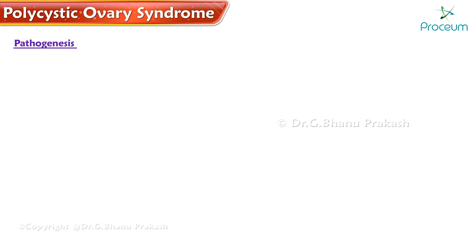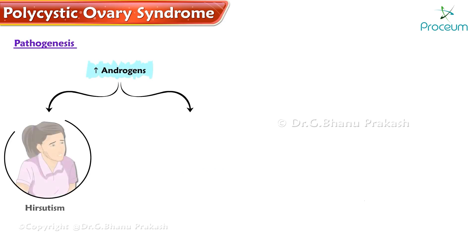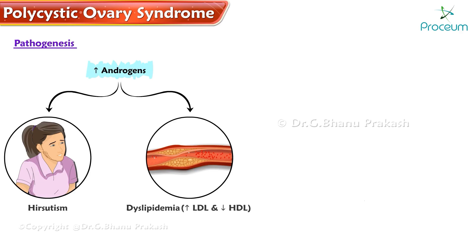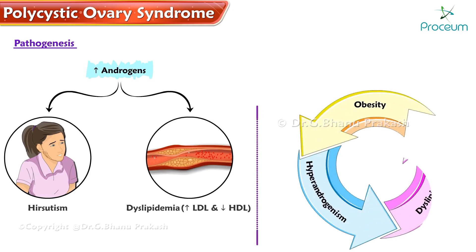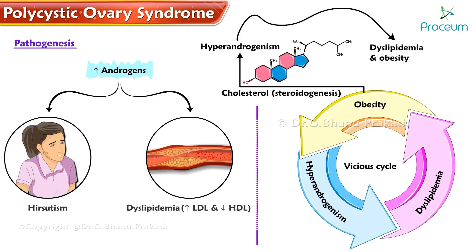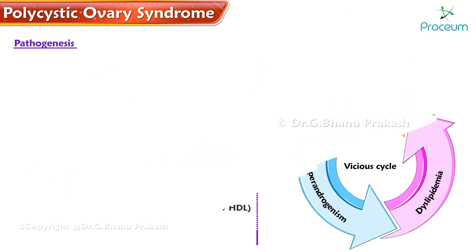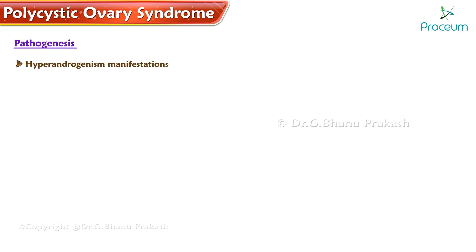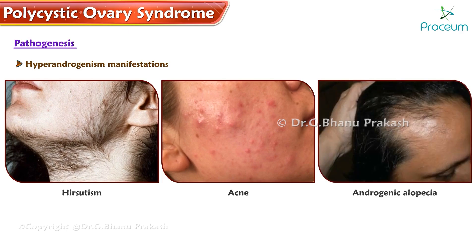The basic pathology is an increase in androgens. These androgens cause hirsutism and dyslipidemia, including increased low-density lipoprotein and decreased high-density lipoprotein. Obesity, hyperandrogenism, and dyslipidemia run in a vicious cycle. Obesity causes hyperandrogenism by providing excess free cholesterol for steroidogenesis, and hyperandrogenism then causes dyslipidemia and obesity. Hyperandrogenism is manifested by hirsutism, acne, and androgenic alopecia.